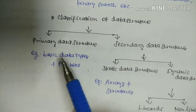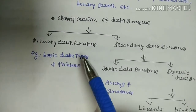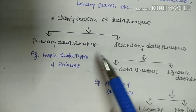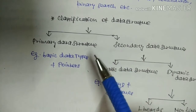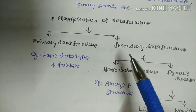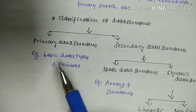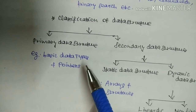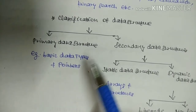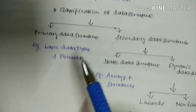The examples for Primary Data Structure are Basic Data Types and Pointers. Basic Data Types store data in the form of Integer, Float, and Char values. Integer means decimal value, Float means point value, and Char stores letters. Pointer is used to store the address, whereas Basic Data Types is used to store the data only.